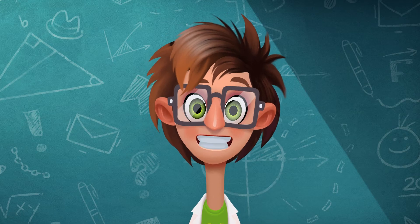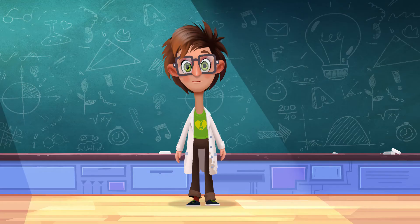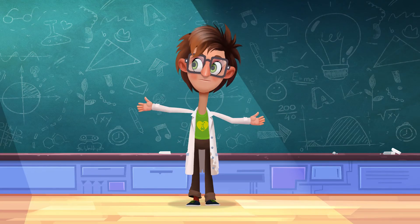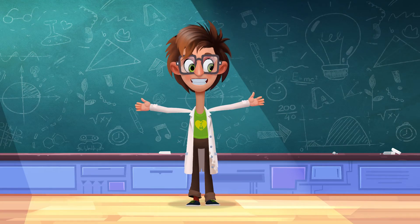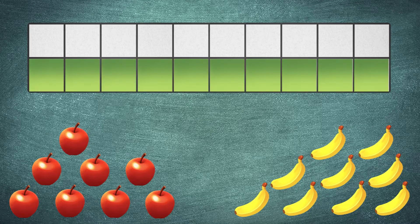Let's solve another problem. Let's count these apples and bananas by placing them in two rows — one for the apples, the other for the bananas.